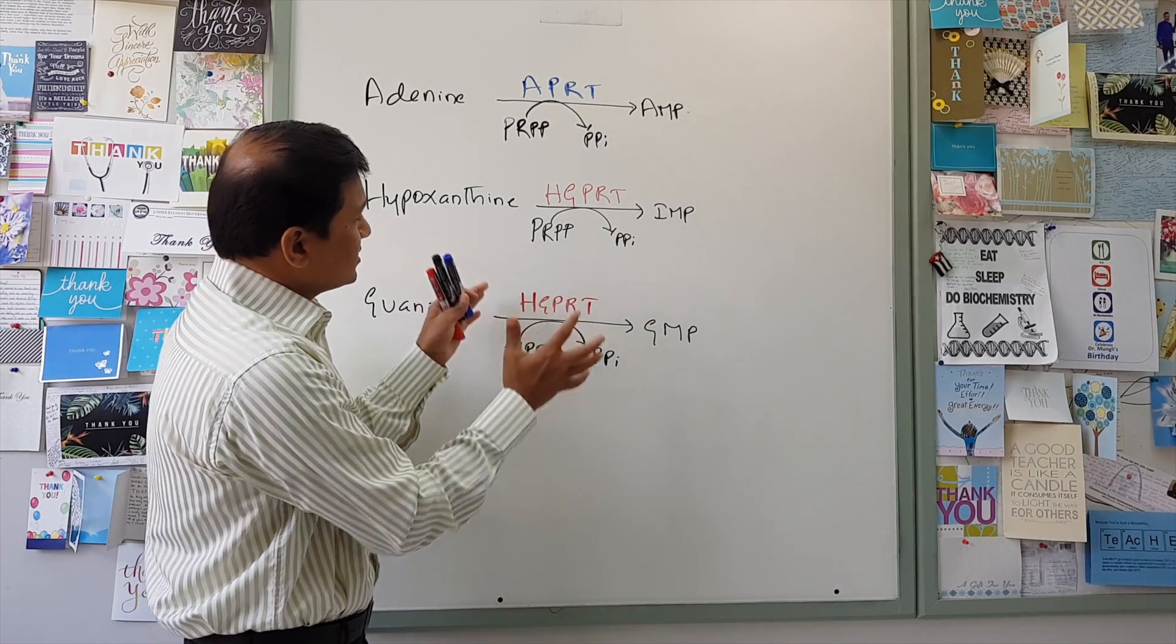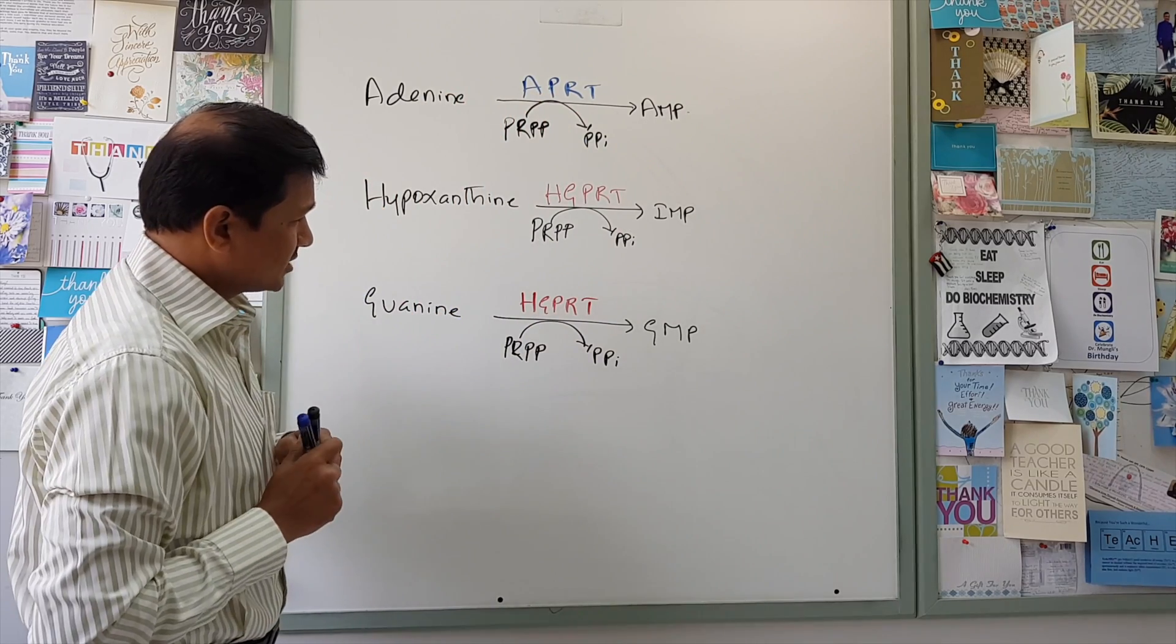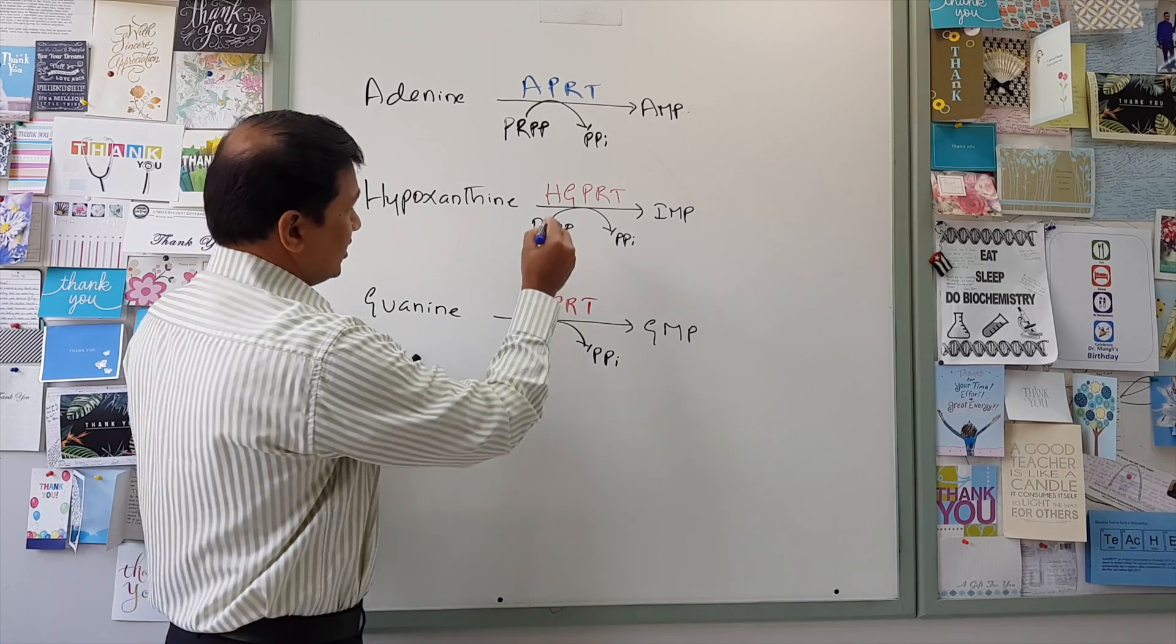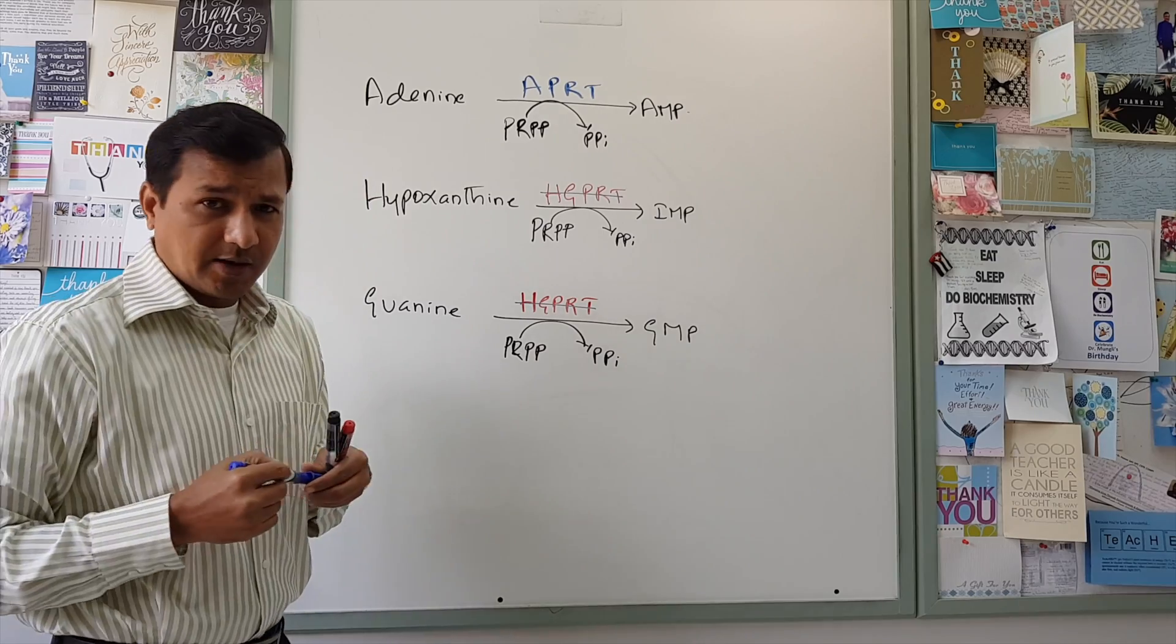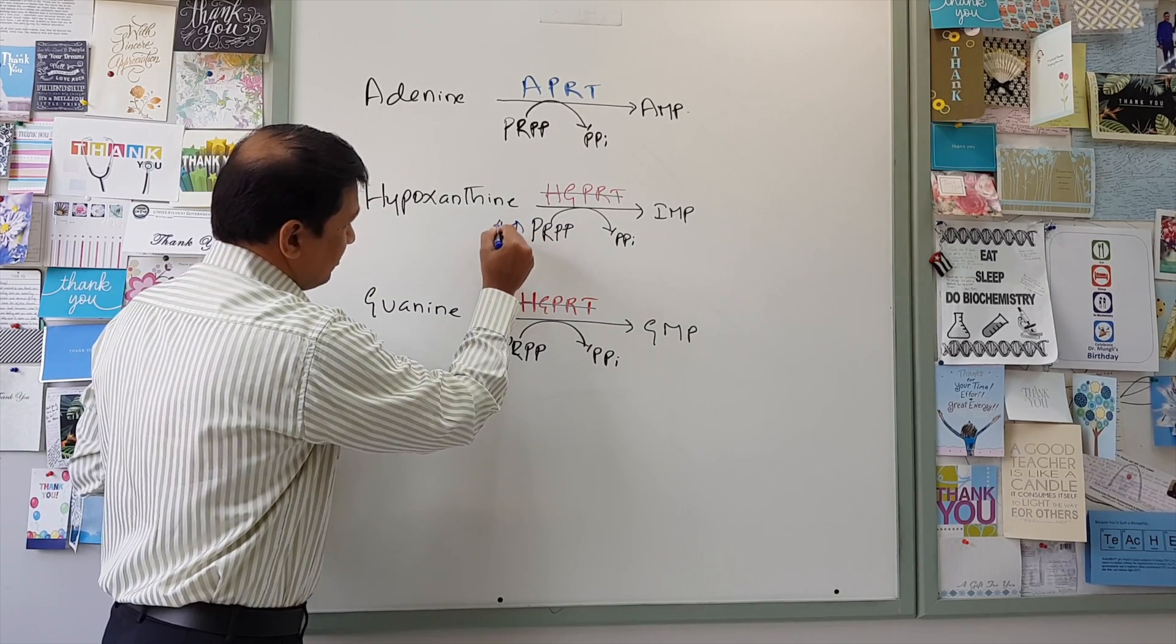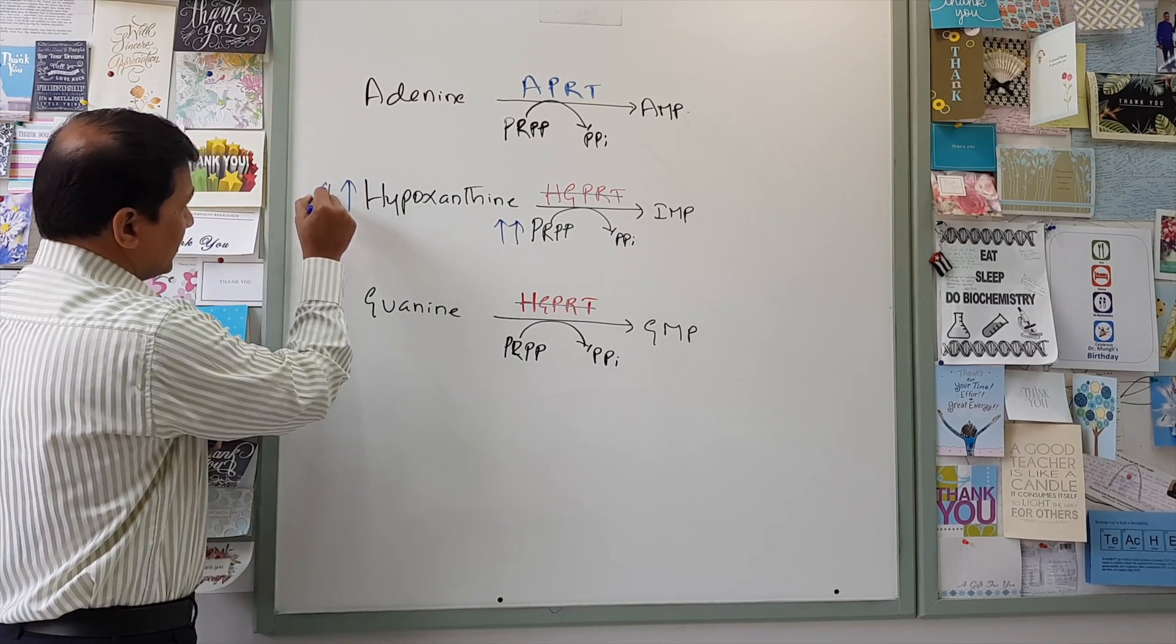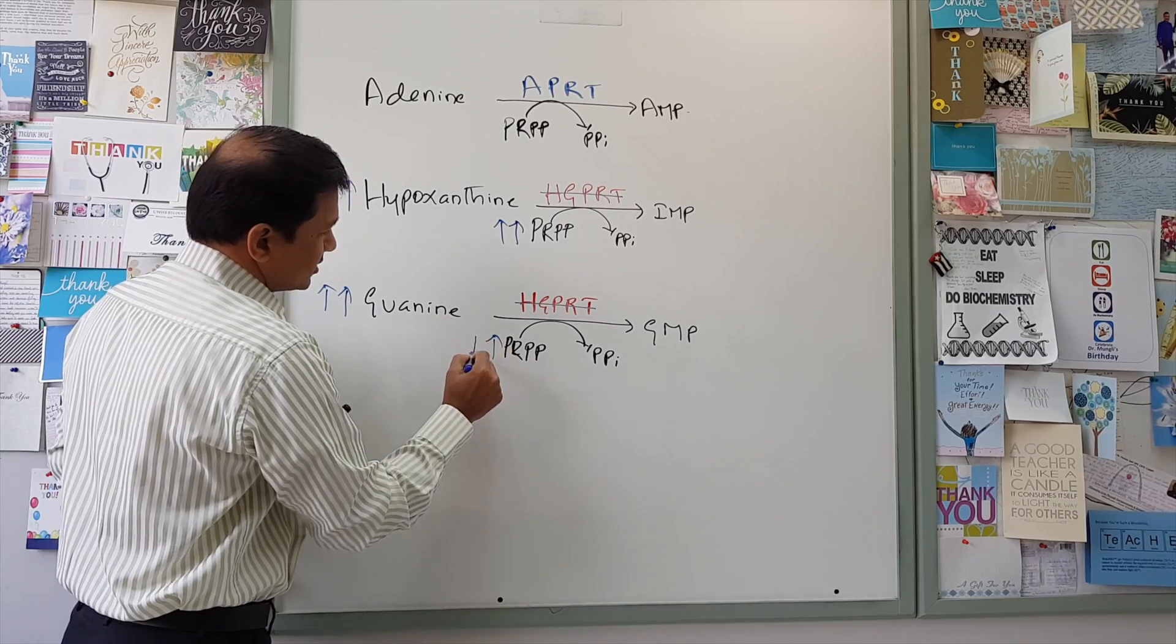Now, Lesch-Nyhan syndrome is complete absence of HGPRT. Let us see what happens because of that. When the HGPRT is not functioning there, I am going to take this out. HGPRT is not there. So what will happen? There will be a rise in PRPP, so there will be increase in PRPP here. And also there is rise in hypoxanthine and there is rise in guanine, because these molecules are not used.